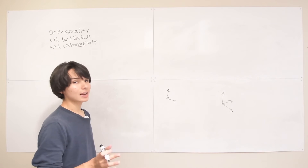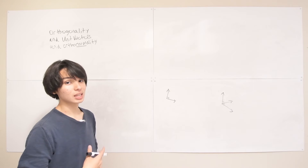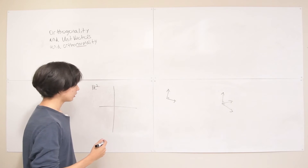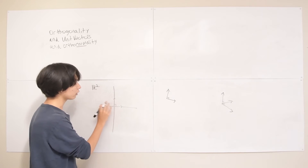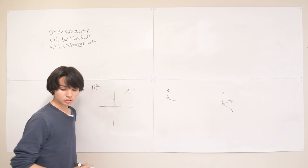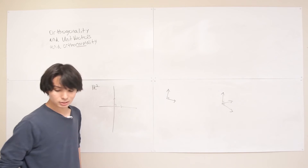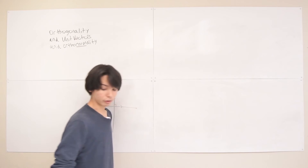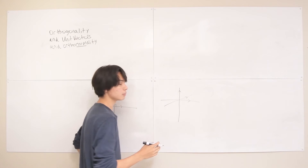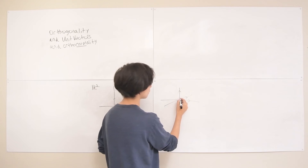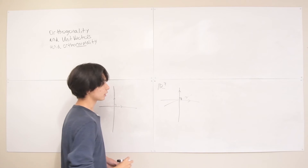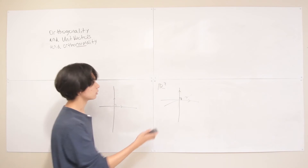One thing to note is that the maximum number of mutually orthogonal vectors equals the dimensionality of the space. In 2D (R²), you can have an orthogonal pair of vectors, but there's no way to have a triplet of mutually orthogonal vectors — that's impossible. Upgrading to 3D (R³) allows a maximum of three mutually orthogonal vectors, but you can't have four.